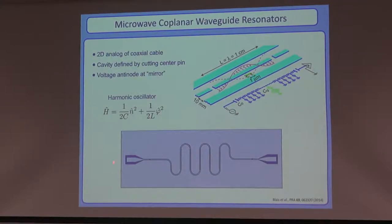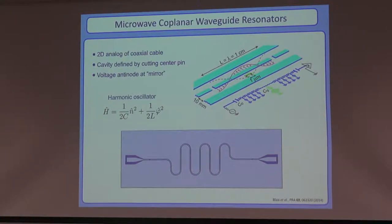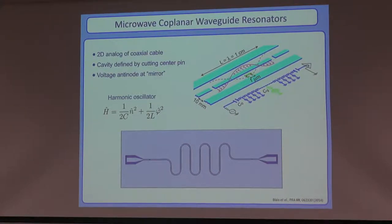At the Hamiltonian level, this is a harmonic oscillator with charge and flux instead of position and momentum. But because it's just a harmonic oscillator, while we love it very much, it's not complicated enough to make an interesting quantum computing or quantum simulation system.